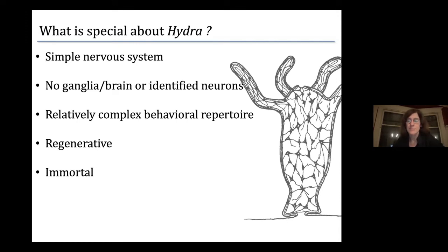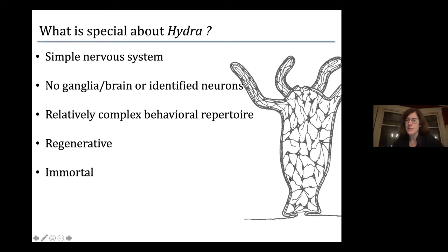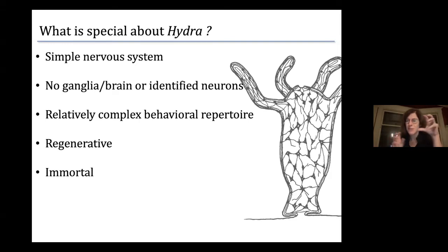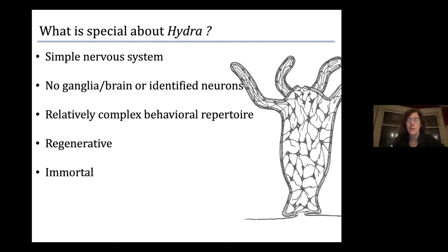C. elegans has maybe 300 neurons, many of which are what's called identified neurons — they have names, distinctive properties, and known functions. Hydra does not have that. Rather than a very hardwired specific nervous system, it has what's called a nerve net: neurons that are pretty similar to one another, connected in a sheet across the body to nearest neighbors. There's no clear brain, no clear decision nodes controlling behavior in a clear information processing pathway, yet Hydra is able to undergo a pretty complex behavioral repertoire.